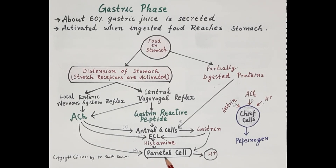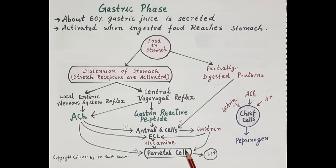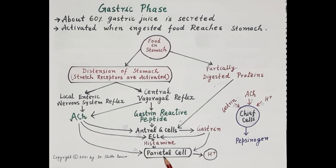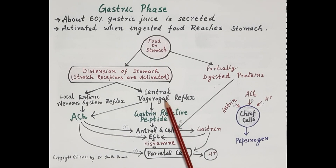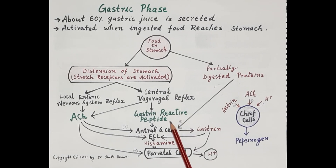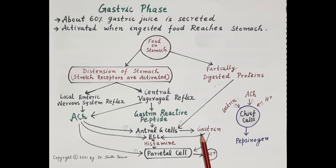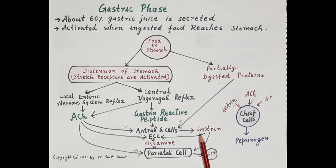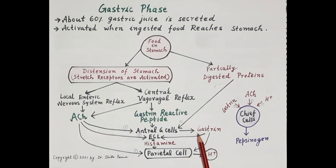Acetylcholine stimulates antral G cells to produce gastrin, and stimulates enterochromaffin-like cells to produce histamine. Acetylcholine binds to its muscarinic M3 receptors on the parietal cells and stimulates them to release acid. Gastrin binds to CCK2 receptors on the parietal cells to stimulate acid release, whereas histamine binds to H2 receptors on the parietal cells to stimulate acid release. Importantly, activation of the central vagal reflex also causes release of gastrin-releasing peptide, which further stimulates antral G cells to produce gastrin — so during the gastric phase there is excessive production of gastrin.